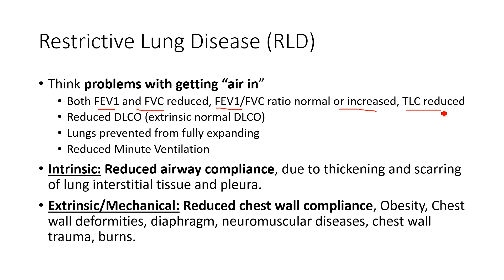Intrinsic causes involve reduction in airway compliance due to thickening and scarring of the interstitial tissue and pleura. Extrinsic causes involve reduced chest wall compliance — things affecting the chest wall, like obesity, chest wall deformities such as pectus excavatum or pectus carinatum, burns, trauma, or neuromuscular disease. The leading cause of mortality for patients with Parkinson's disease, stroke, or spinal cord injury is pneumonia, due to these restrictive patterns in the lungs.